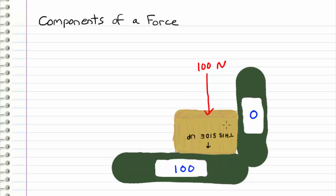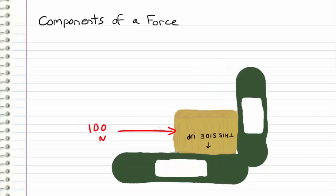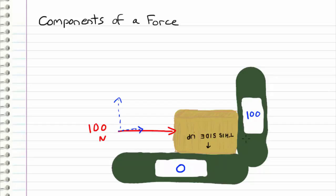No matter how I push on this box, both of my scales are going to show the components of that force. Now what if I push the box in the horizontal direction? Our force has no component pointing downward, so the scales show that there is no component of this force going downward. In our xy plane, the force lies entirely along the x-axis, meaning it only has a component in the x direction and no component in the y direction. The bottom scale reads zero, and the vertical scale on the right shows the entire force.